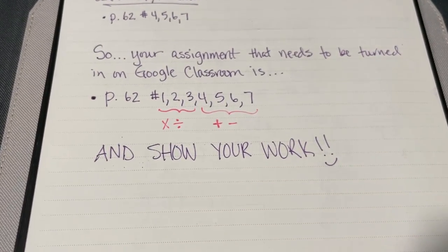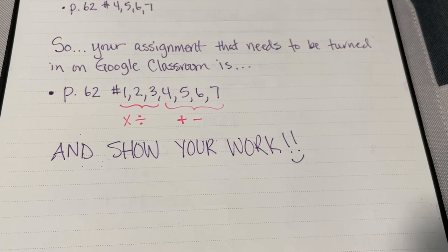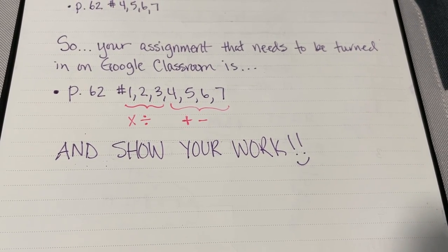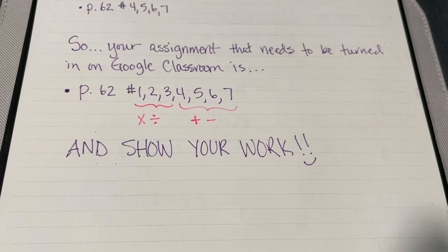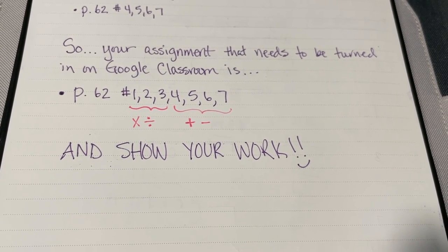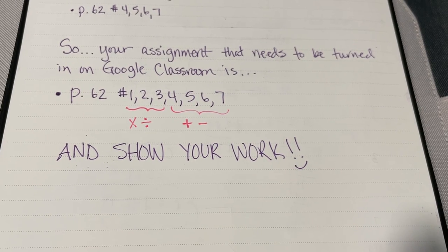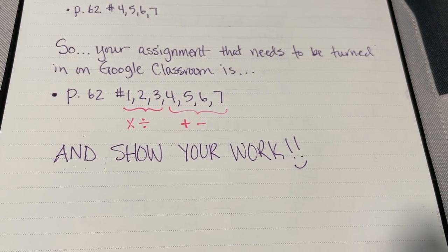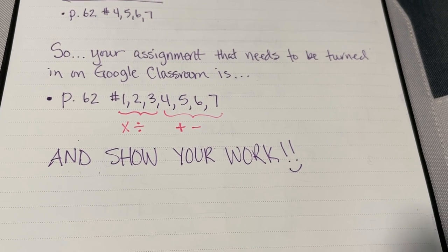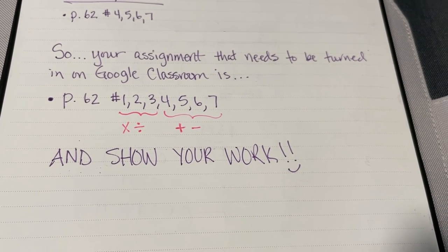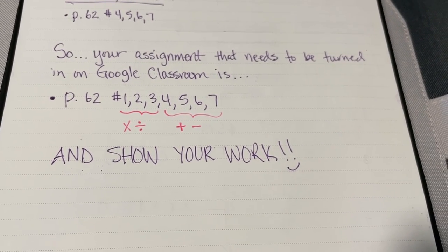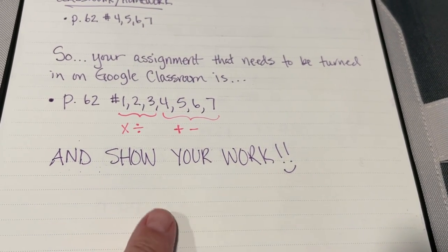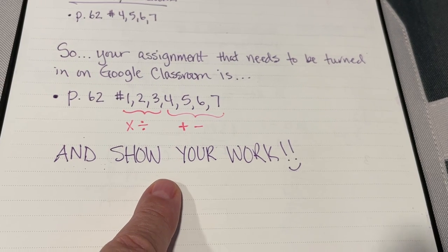Your assignment for class or homework, depending on how far you get today, is page 62, numbers 1 through 7. Numbers 1, 2, and 3 use multiplication and division with scientific notation. Problems 4 through 7 are addition and subtraction with scientific notation. Remember to show your work.